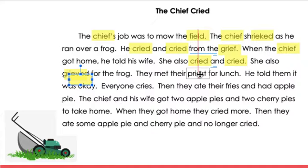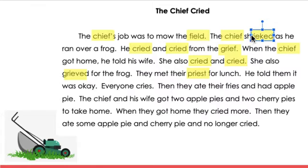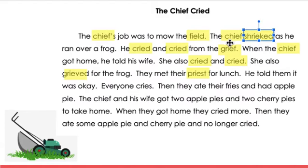Practice reading each of those highlighted words on your own. If you're not sure, try E like thief or I like pie. Let's read them together to double check your work: chiefs, field, chief, shrieked, cried, cried, grief, chief, cried, cried, grieved, priest.